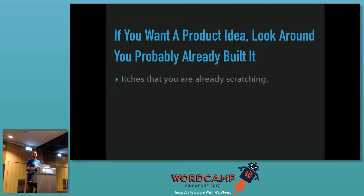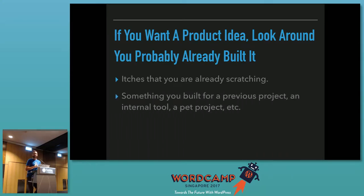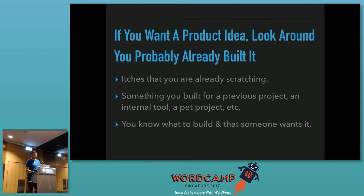You probably have itches you've been scratching for a while, and these are really the best things to turn into a product. Something that you've built for a previous project, some internal tool you have, some internal pet project you've been working on — something that you kind of maybe wish you could have bought but didn't really exist the way you wanted it, so you just built it yourself. You use it maybe every day, every week. Building something like that is easier because you know what to build and you know that at least one person on this earth wants it, and that's you. So this is a good place to start.